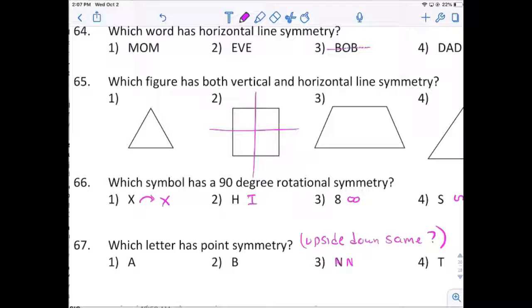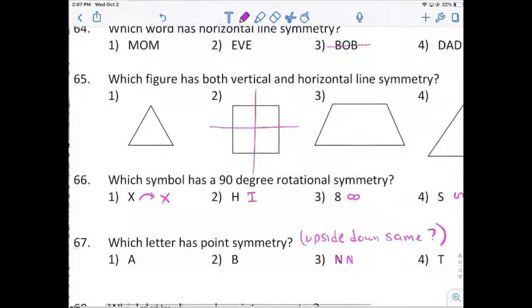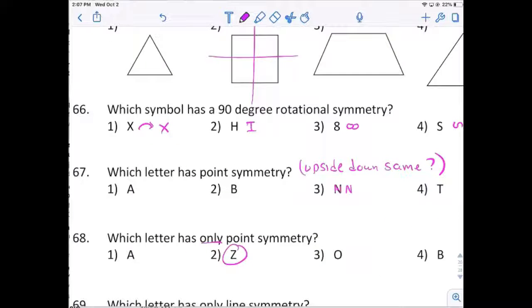Number 67. Which one has point symmetry? Which one looks exactly the same upside down? That would be N. Number 68. Which letter has only point symmetry? Which means which one can be turned around? That would be Z.